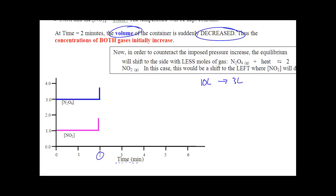So everything is going to have a spike up. Then it's going to shift to undo your change. So if I am shrinking the volume of container, it's going to go to the side where there's the least amount of moles of gas. In this case, it's to the left.